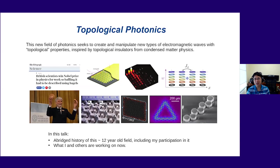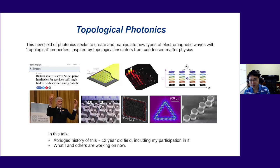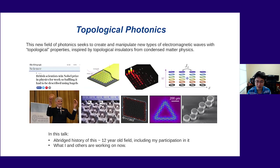Within this gigantic endeavor spanning physics, electrical engineering, and many other subfields, topological photonics is a new approach that attempts to create and manipulate new types of electromagnetic waves with a new feature not previously considered — called a topological property. Part of this talk will explain what topological property means. This is inspired by a field of condensed matter physics called topological insulators. Topological photonics is by now a 12-to-15-year-old field, still relatively young, and I'll give a historical description including my own participation.